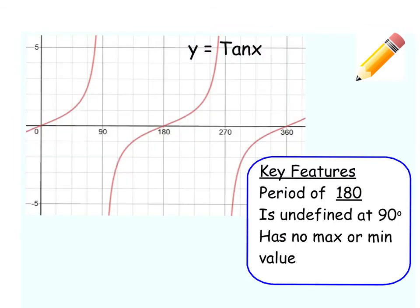And then there's the tan graph, which is a bit of an exception. The tan graph looks nothing like the sine or cosine graph. Its period is 180 rather than 360, so tan stands on its own. You'll notice the curved shape starts to repeat at 180 — you've got two upward curves, and then that exact same shape repeats again. So this one starts to repeat at 180.